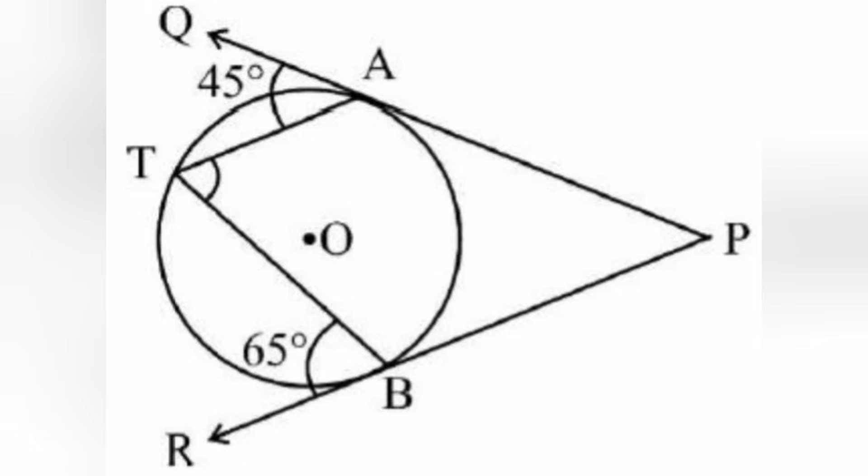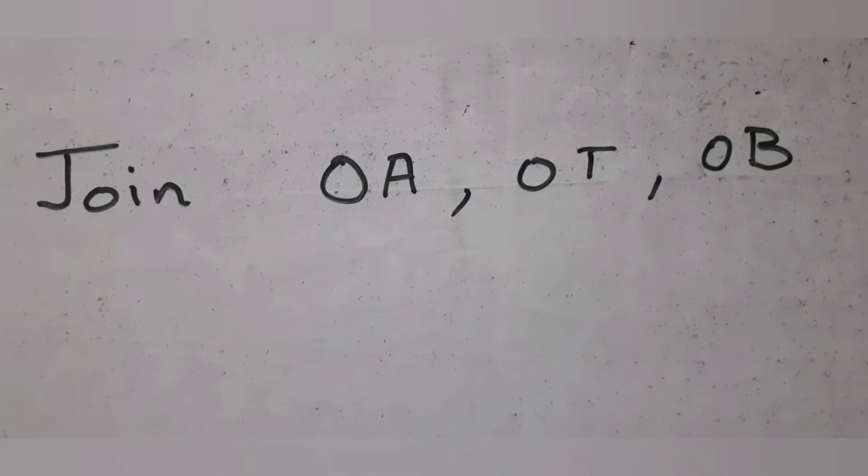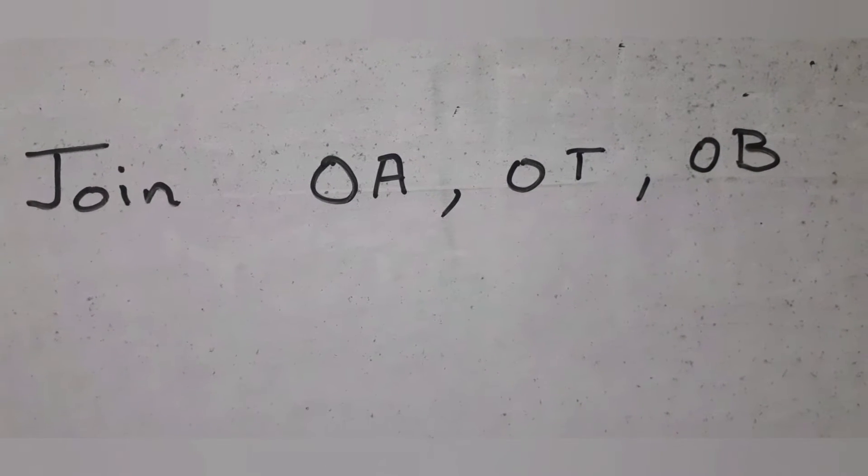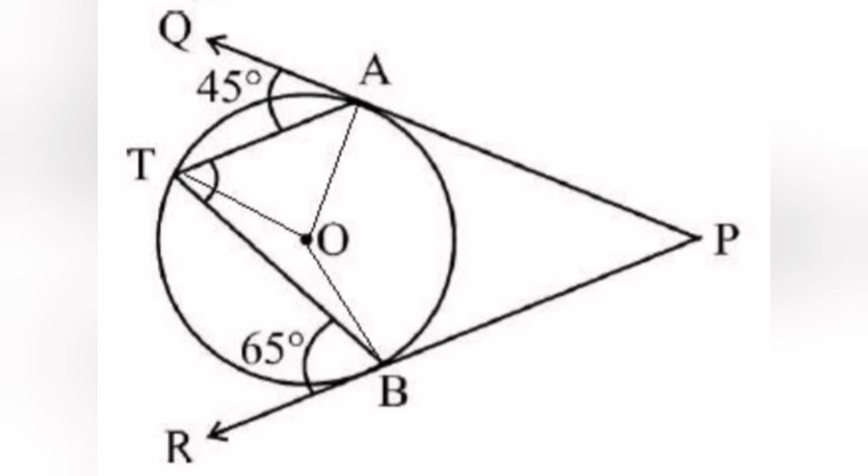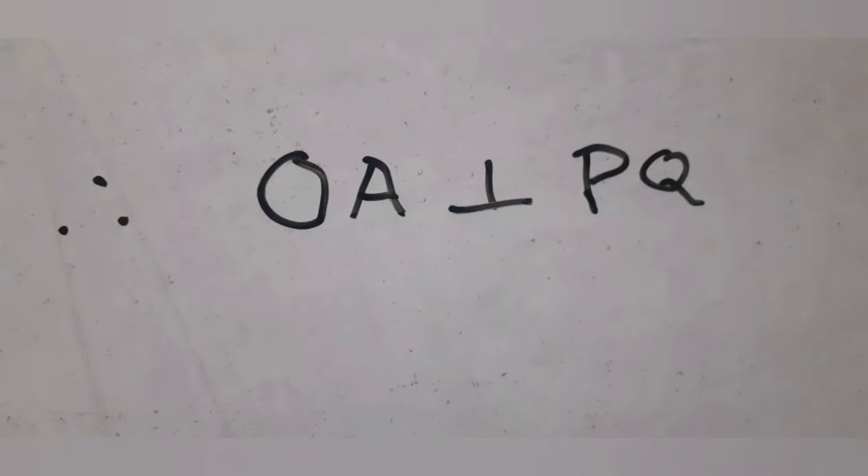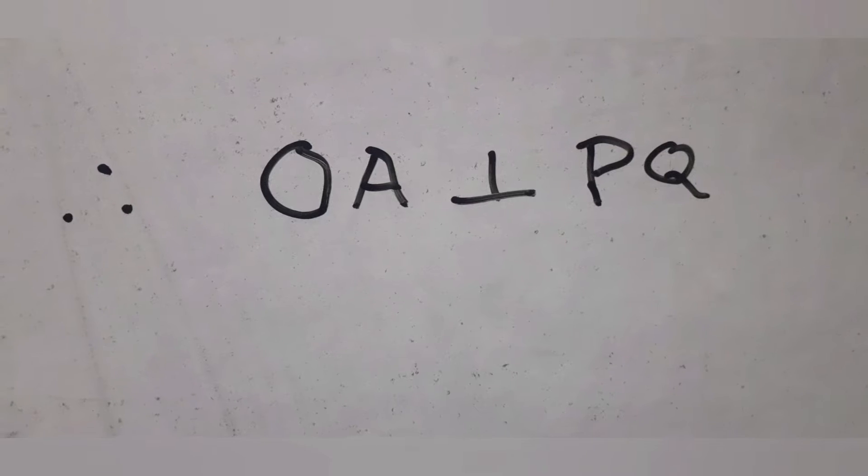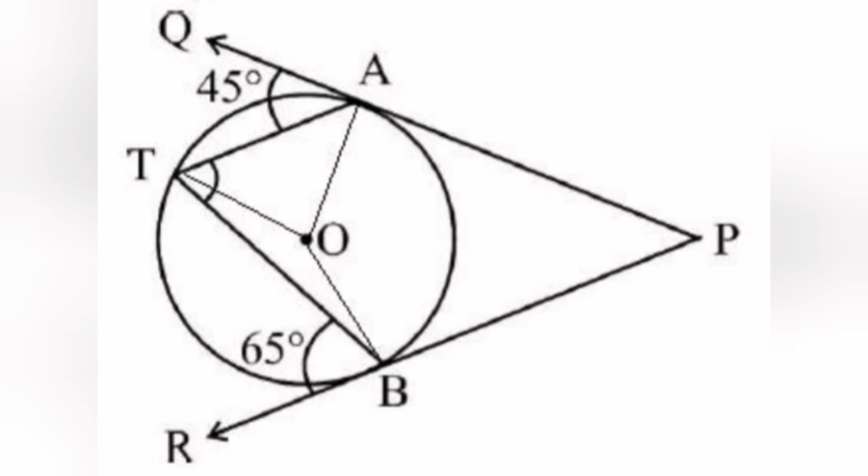Join OA, OT and OB to get two triangles. PQ is the tangent at point A and OA is the corresponding radius, so OA is perpendicular to PQ, which means angle OAQ equals 90 degrees.